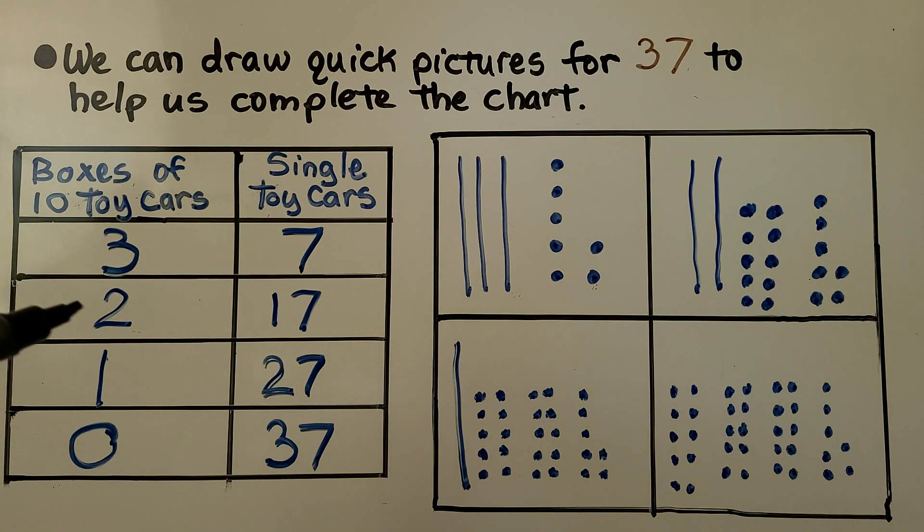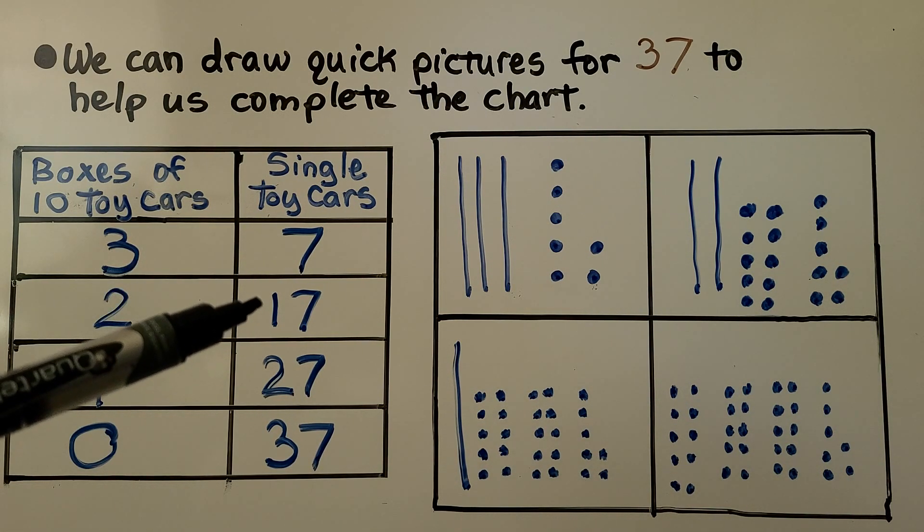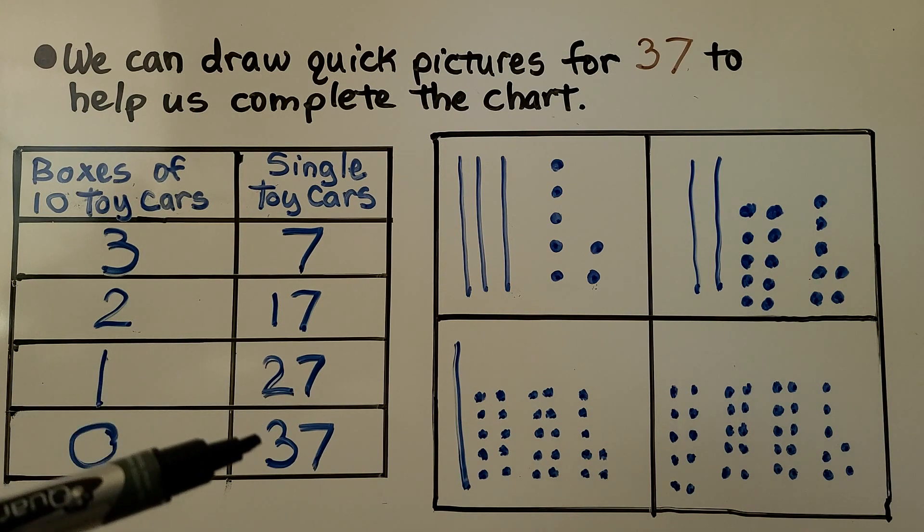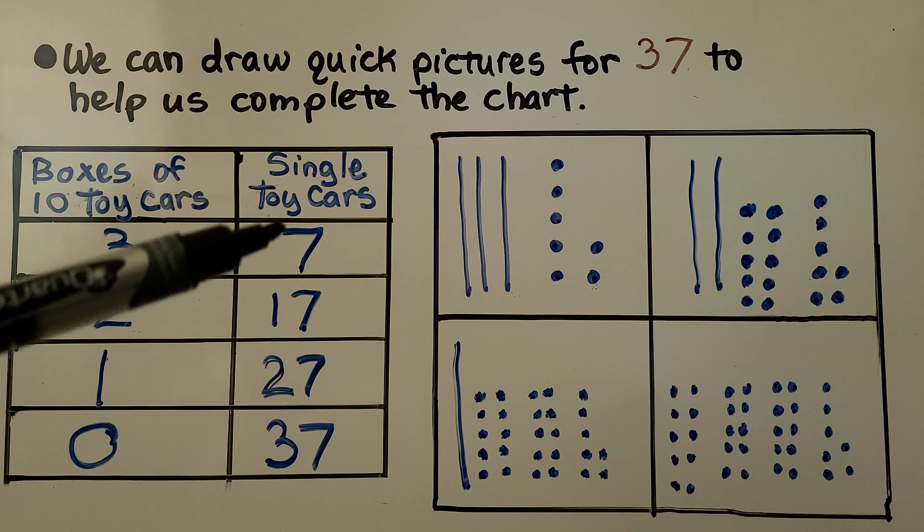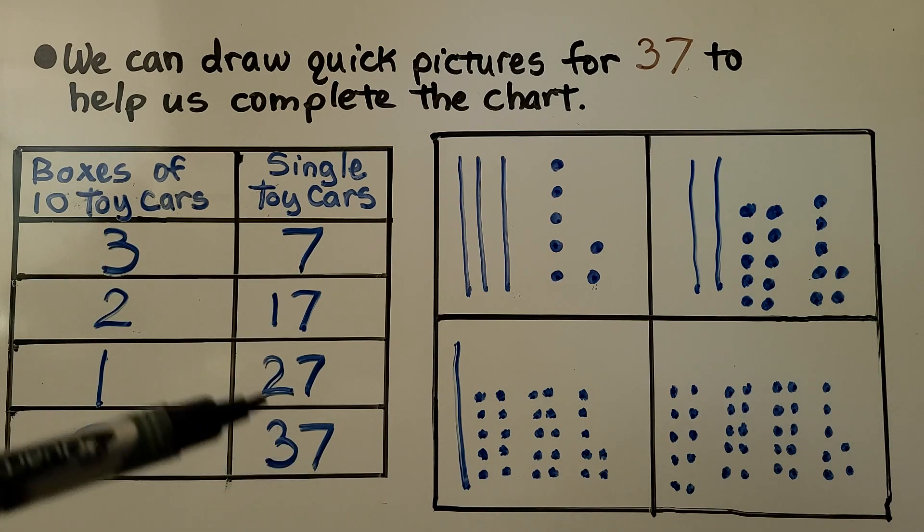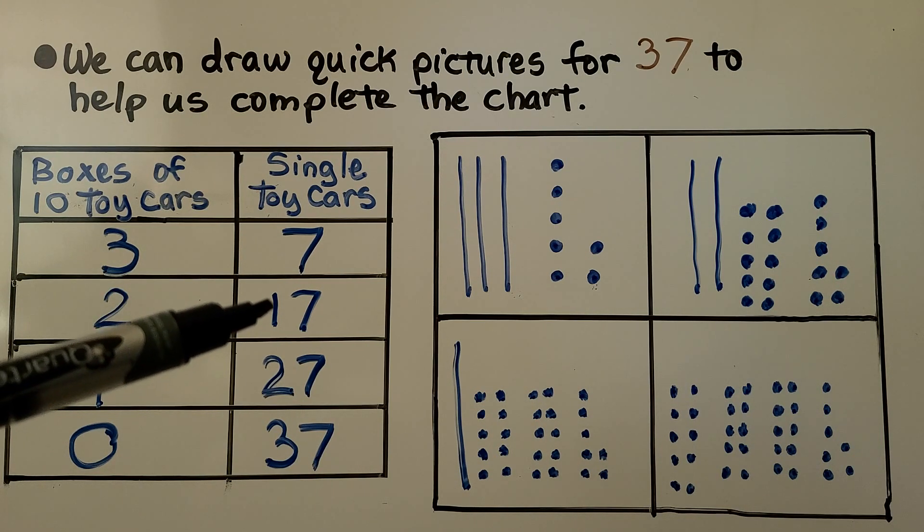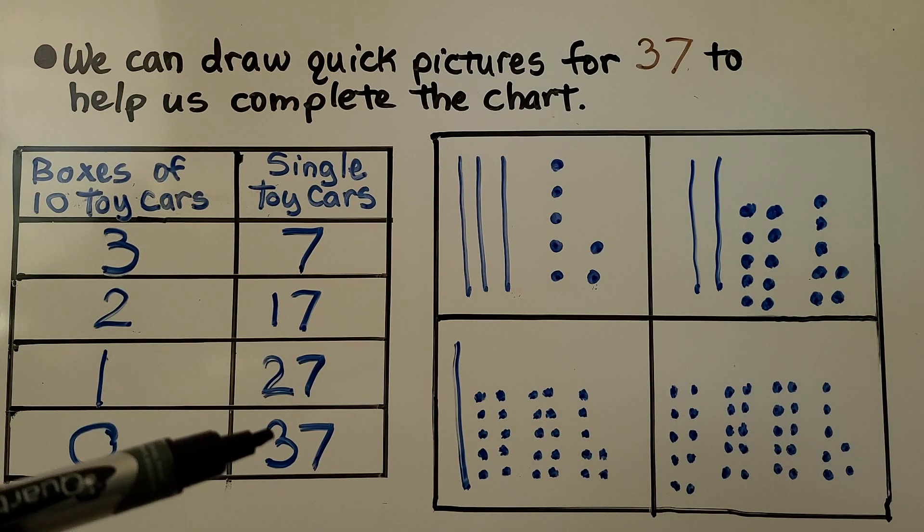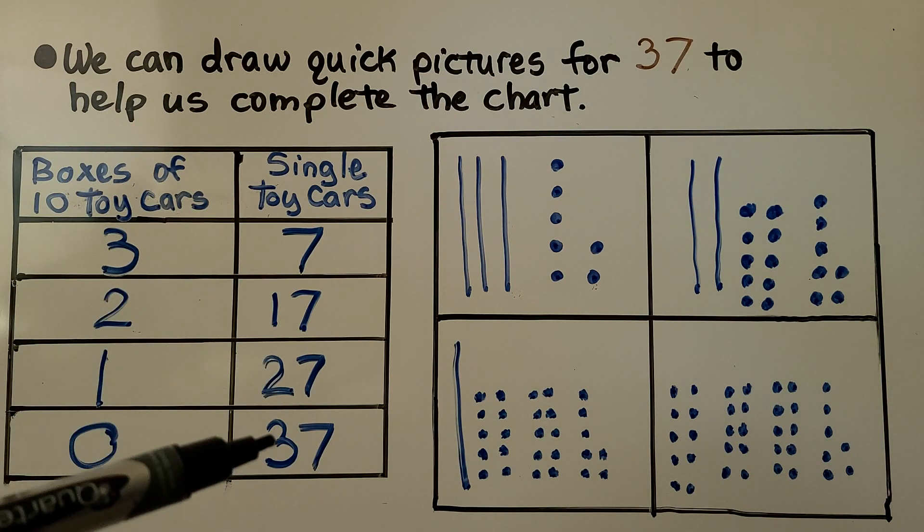It's going 3, 2, 1, 0 and the single toy cars are going 7, 17, 27, 37. Do you see the pattern? The 7's are staying the same, but this is going from 7 single toy cars to having a 1 here, a 2 here, a 3 here. Do you see as this is going down? This number is going up?